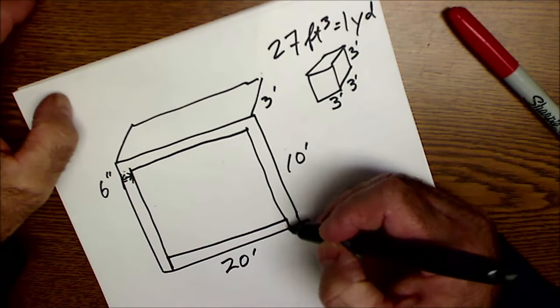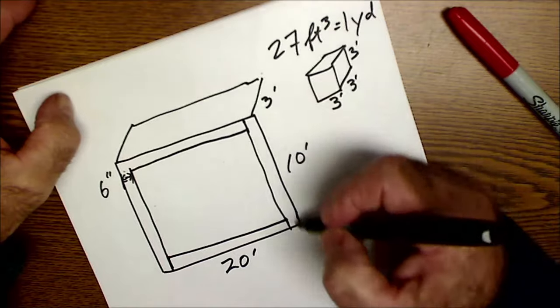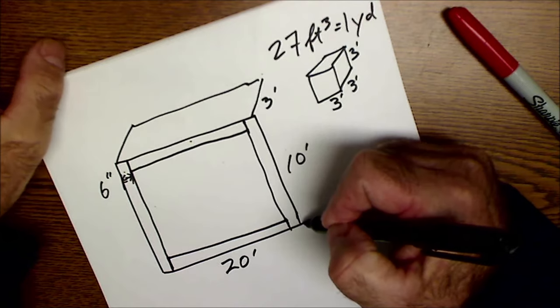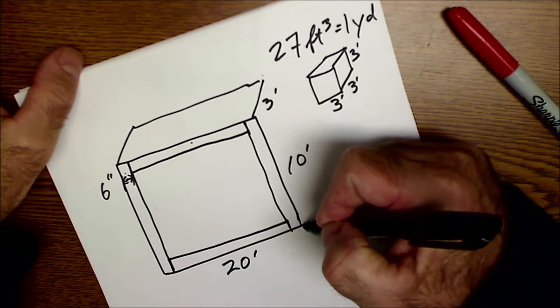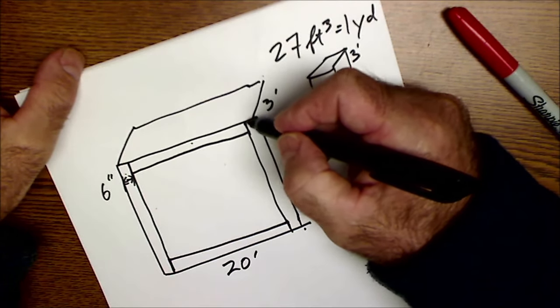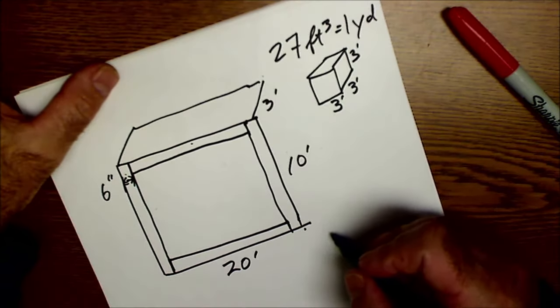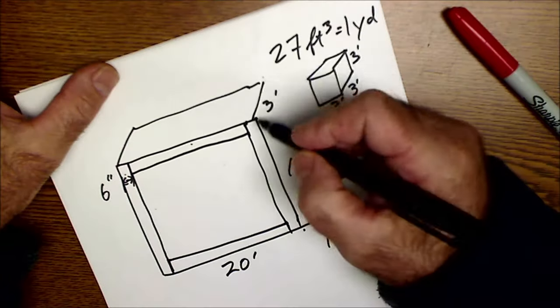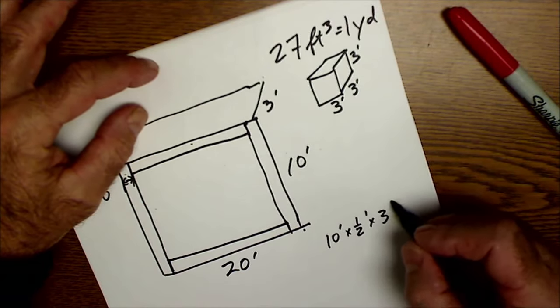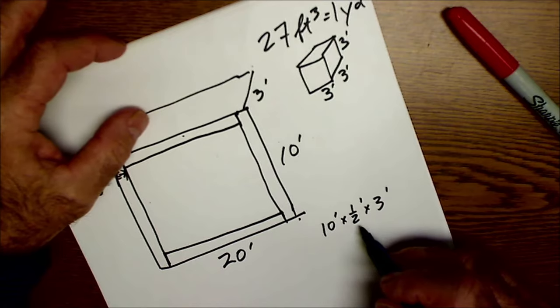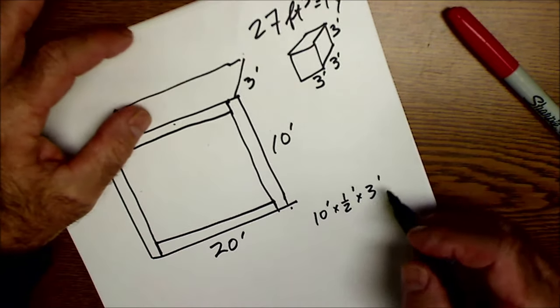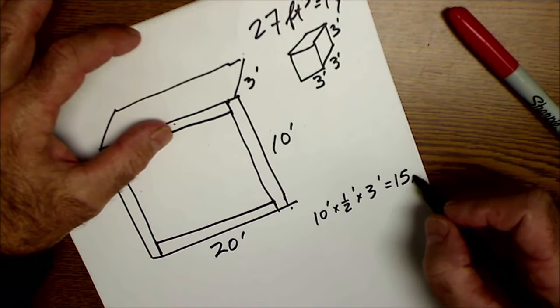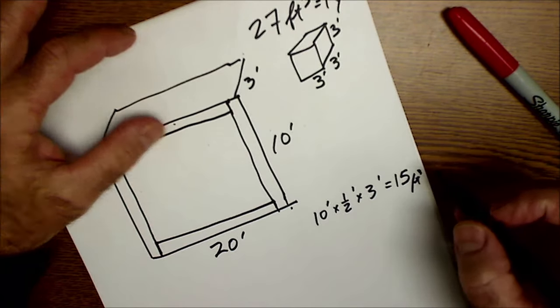So this rectangle right here is ten feet by six inches, which is a half foot, so it's ten feet by a half foot by three feet deep. So ten times a half is five, five times three is fifteen cubic feet. Okay, then that's this rectangle and this rectangle, so that's 15 cubic feet plus 15 cubic feet.